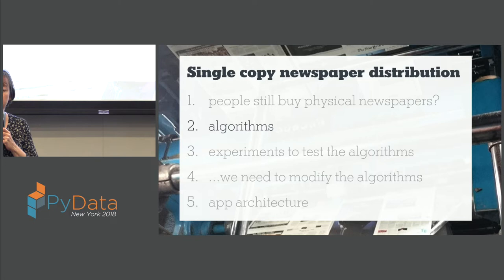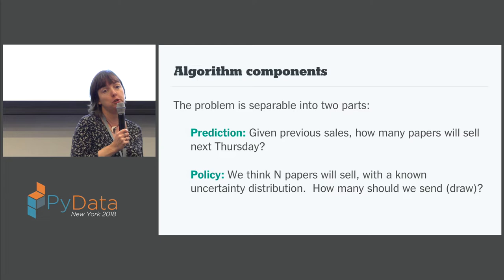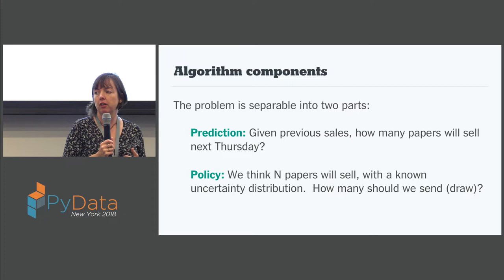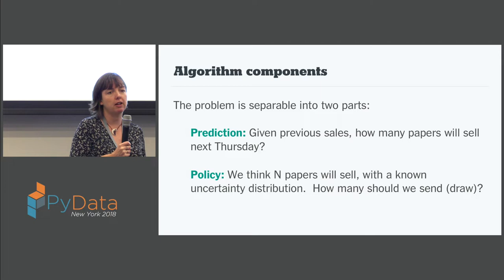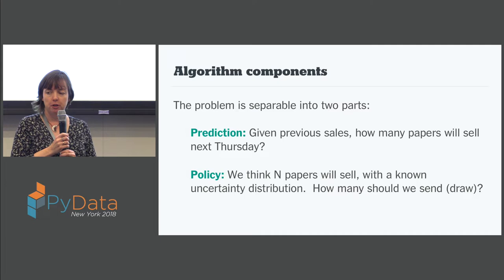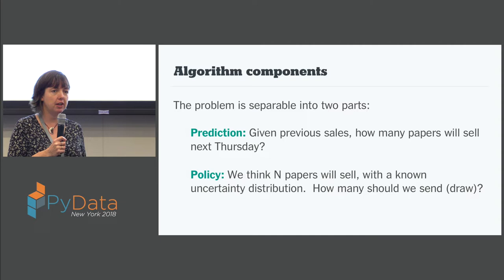In terms of algorithms for this, the problem is separable really into two parts. The first question is regarding predictions of demand: given previous sales in certain stores on certain days, how many papers do we think will sell on a given next Thursday? But then once we know that, there's the second part — if we think four papers will sell next Thursday, how many should we really deliver?